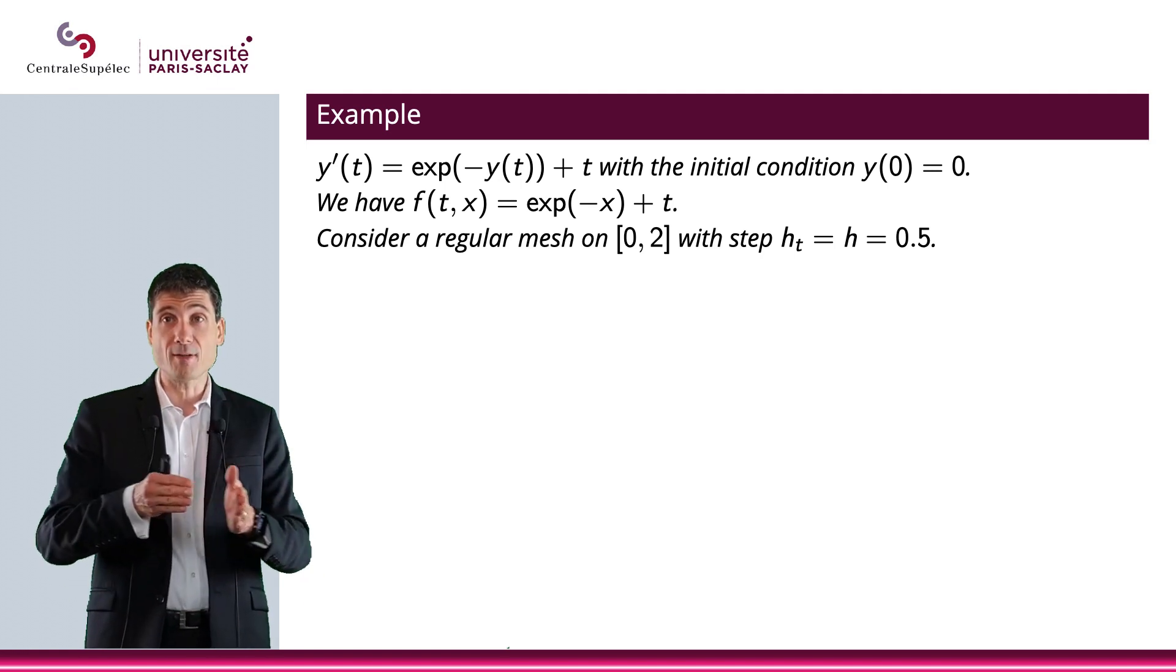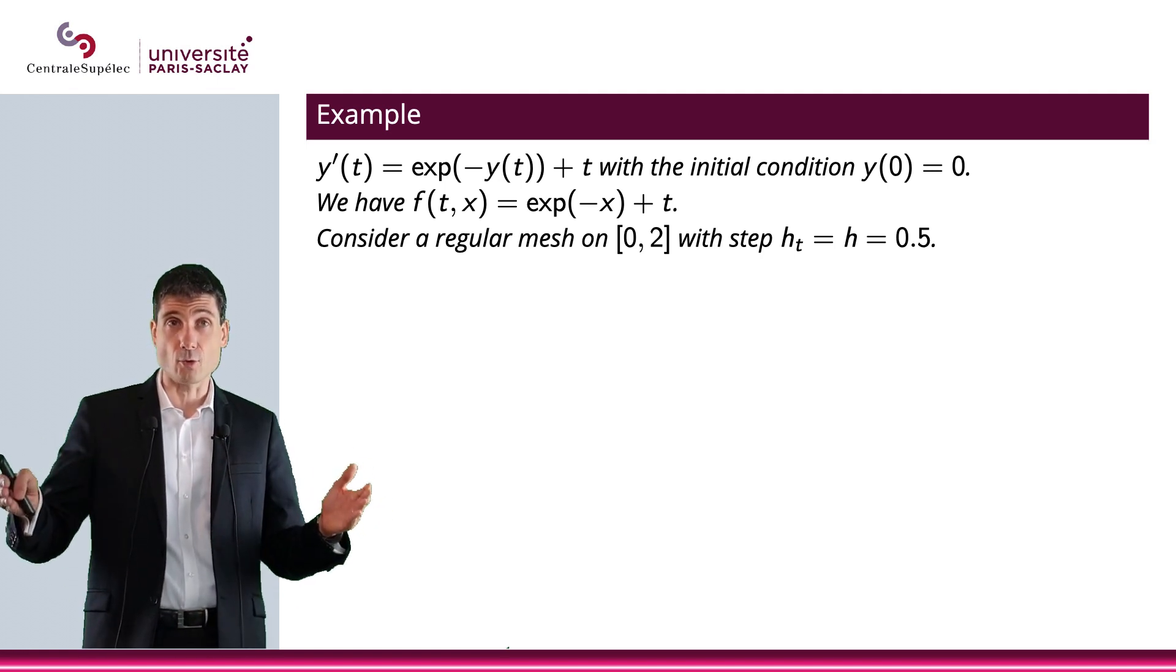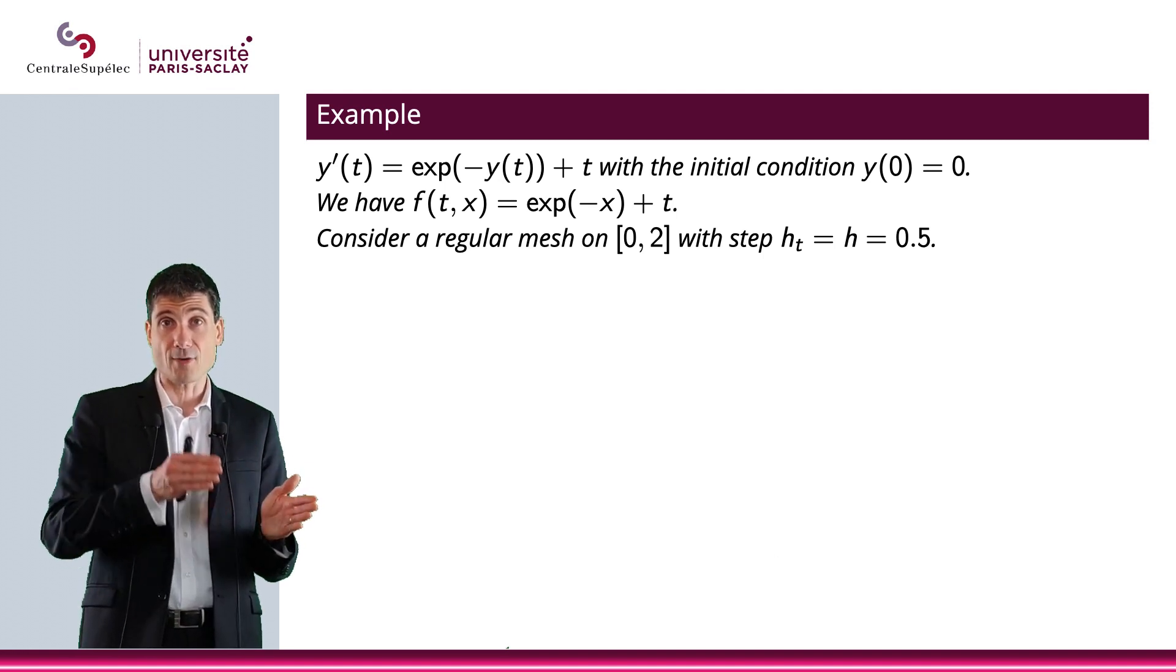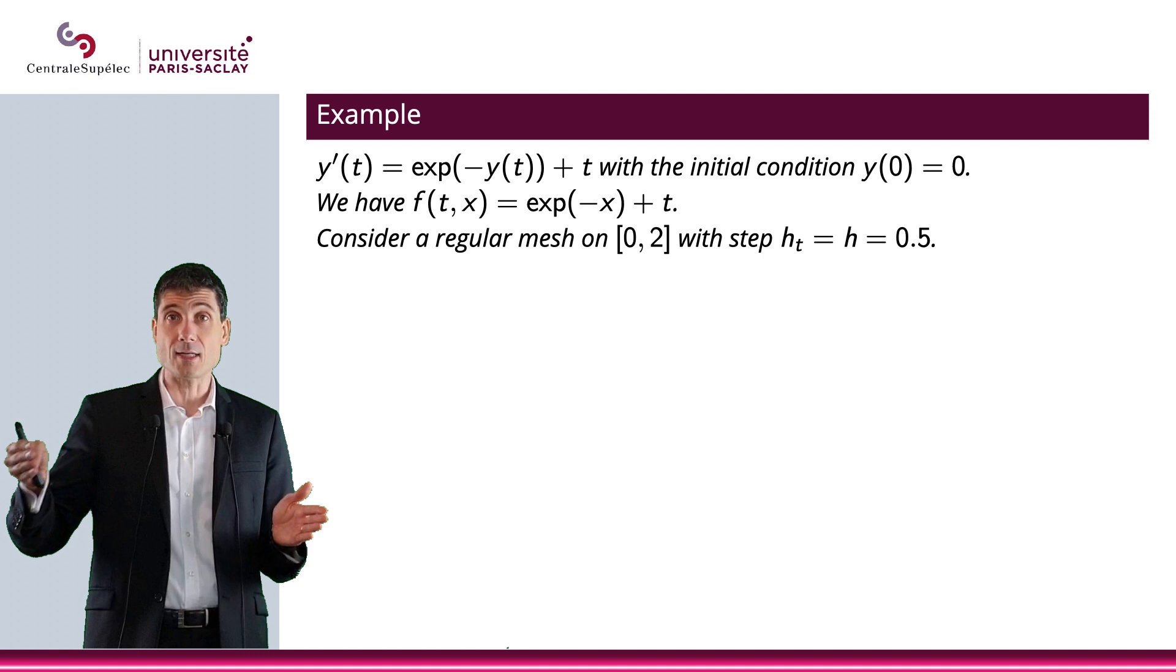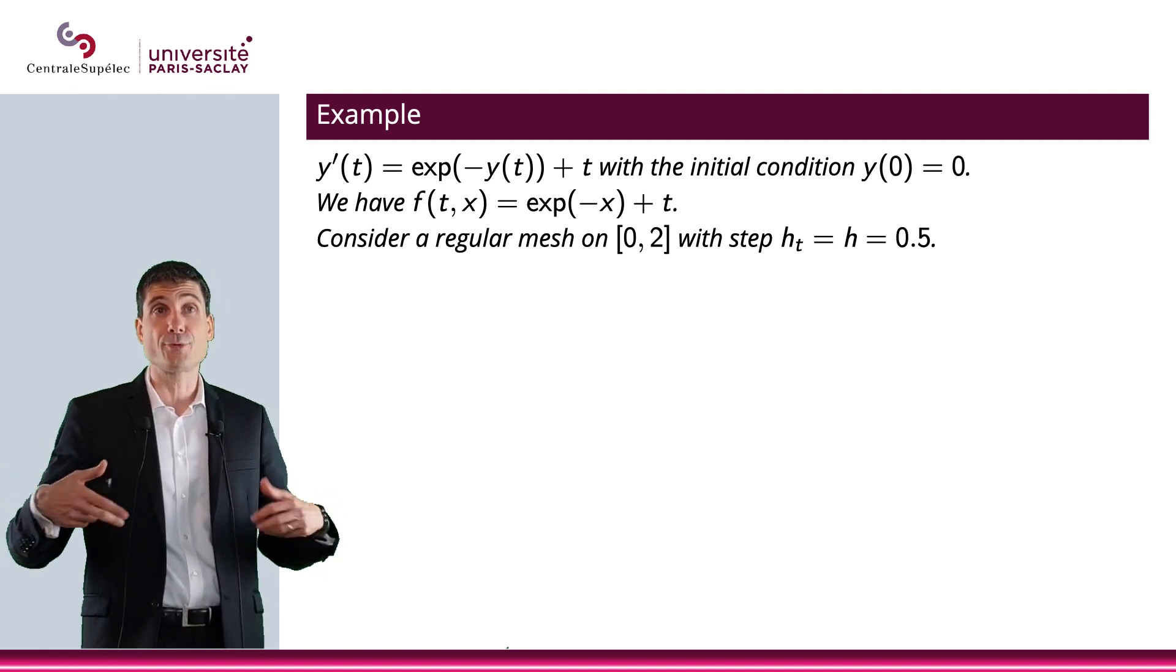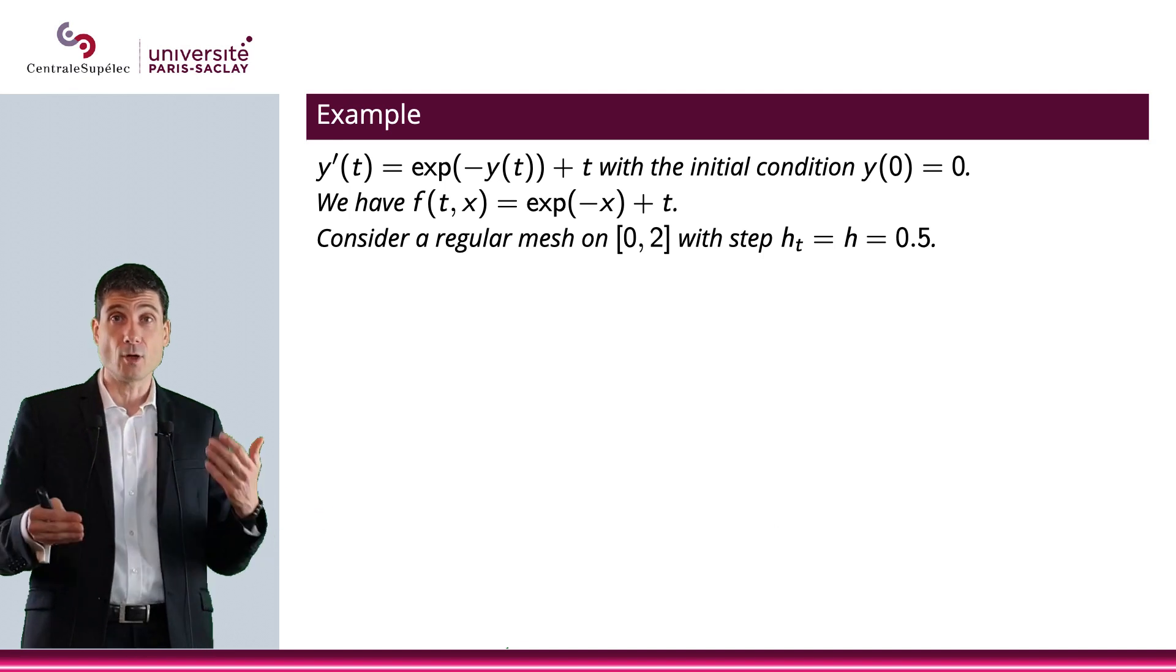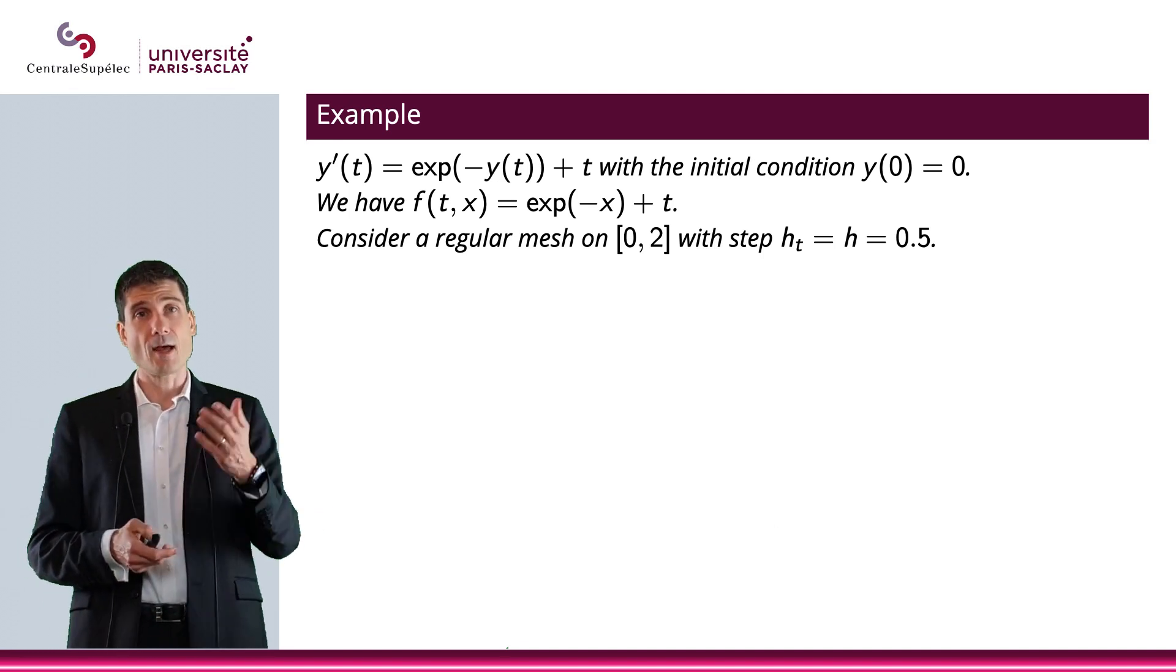And what we're going to do is consider a mesh of the interval 0, 2 with steps h or delta t that will be 0.5. So we're going to subdivide our interval 0, 2 as we're going to look at what's happening in 0, in 0.5, in 1, in 1.5, and in 2. So hopefully, we can compute y, an approximation of y, on this interval with this Euler-Forward method and that h.